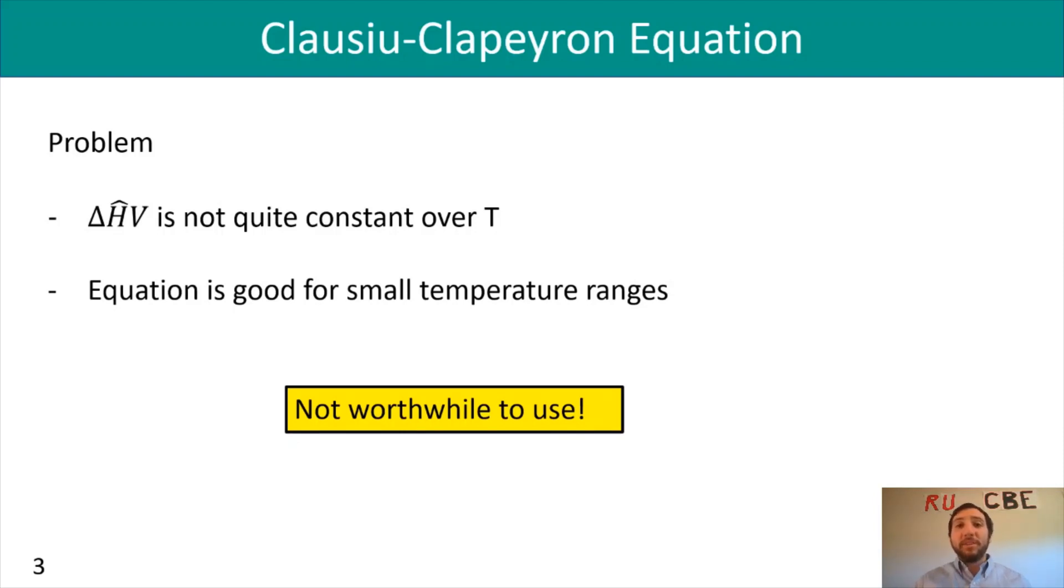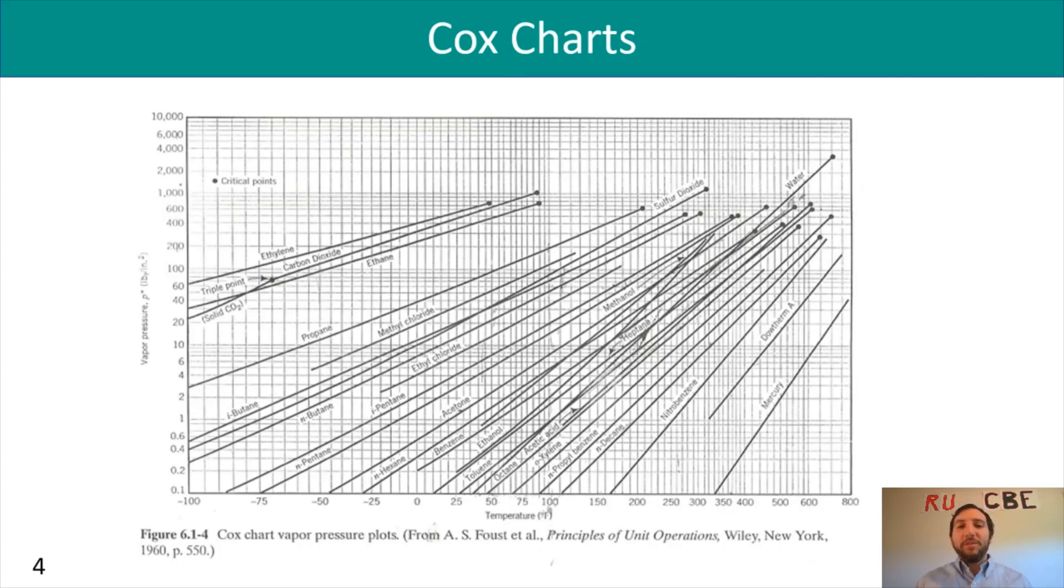Another option we have is using Cox charts, where you've got vapor pressure on the y-axis and temperature on the x-axis, with a large number of compounds on the same chart. You can read the chart to obtain your vapor pressures. The challenge is that this chart is very compact, making it harder to obtain the correct P* value. You have to do a lot of eyeballing to make sure you're close to whatever that vapor pressure is supposed to be at your given temperature.